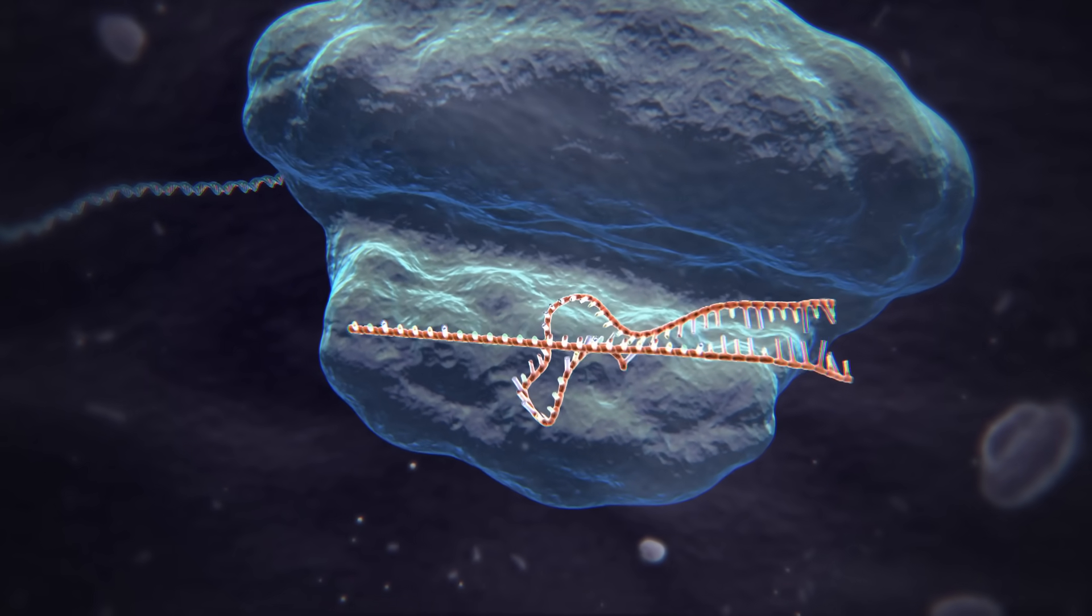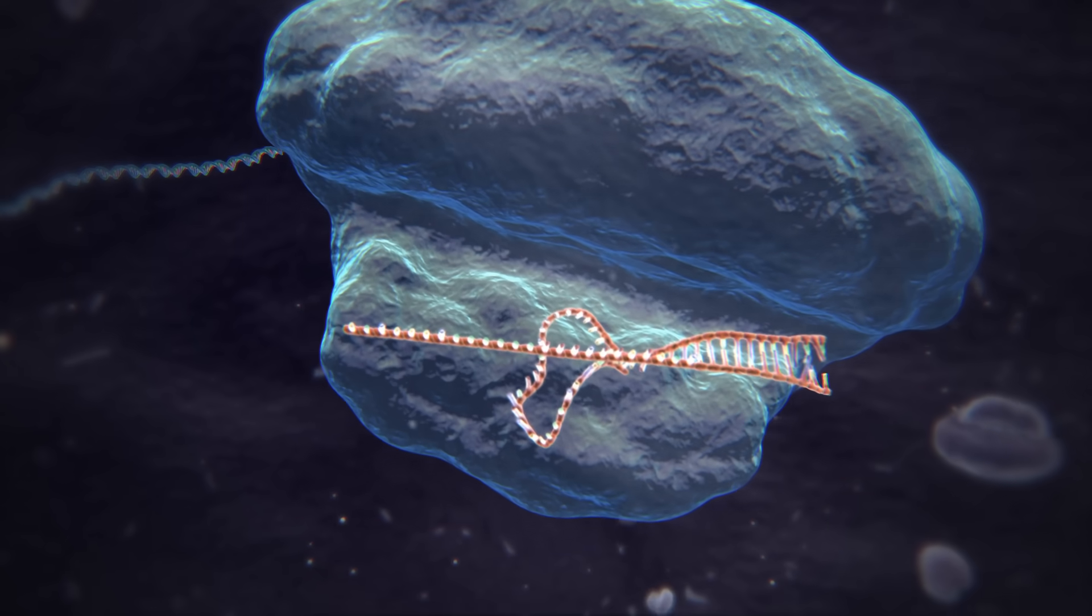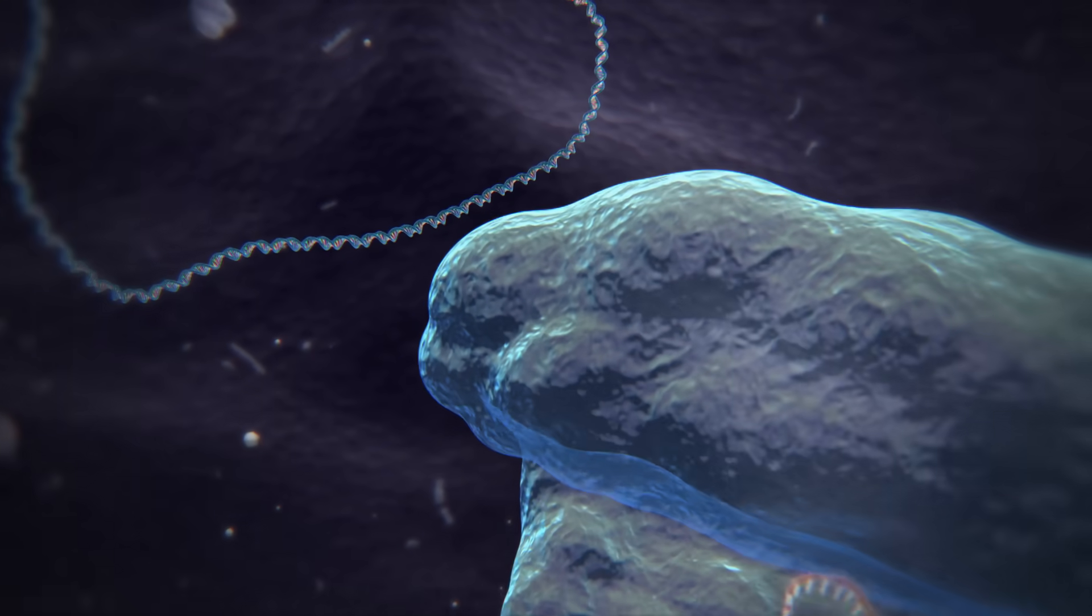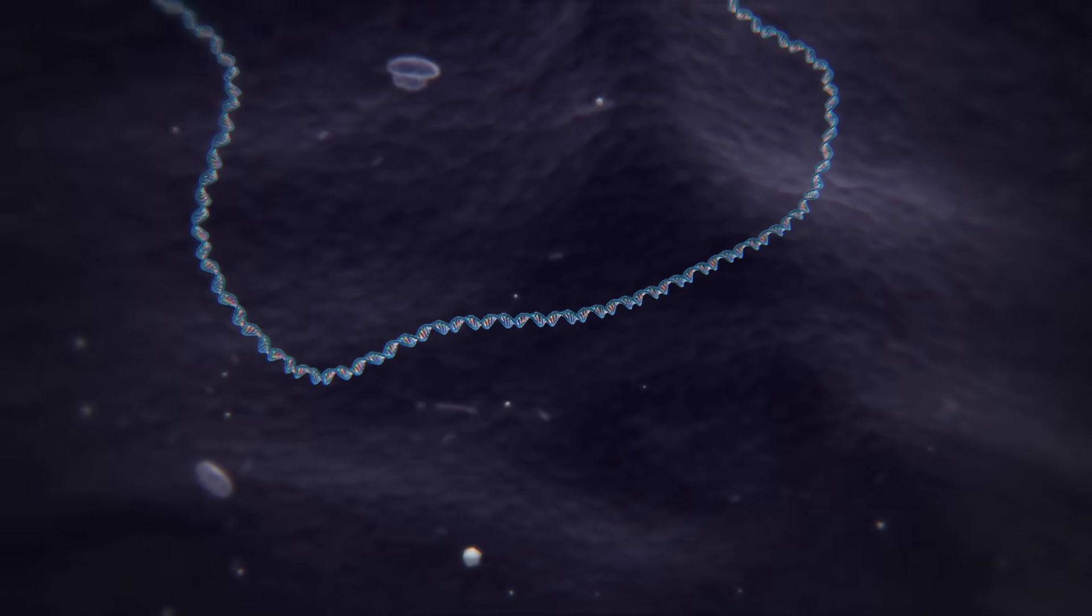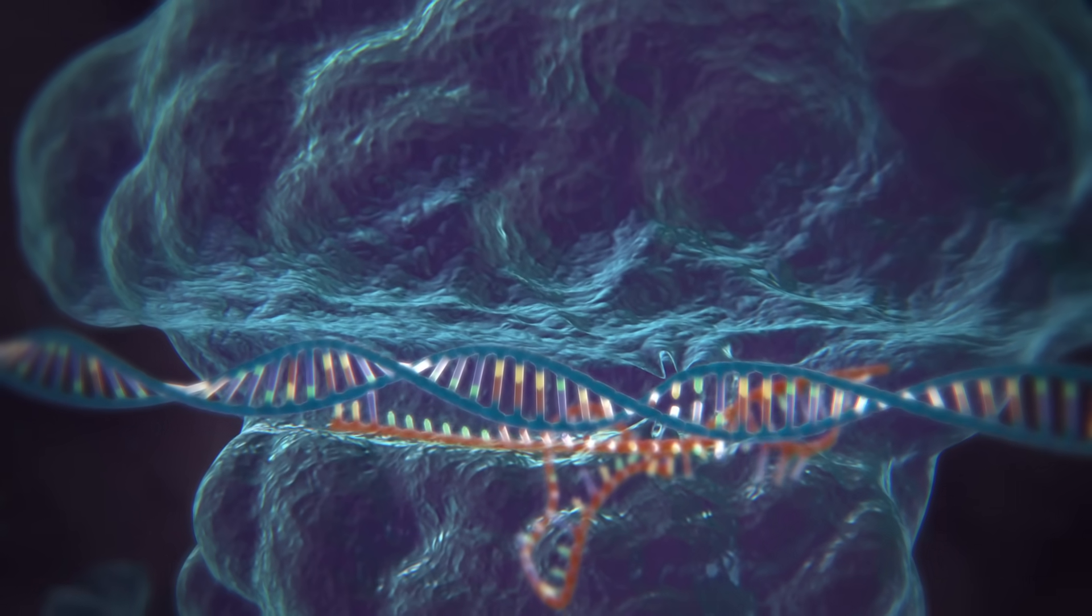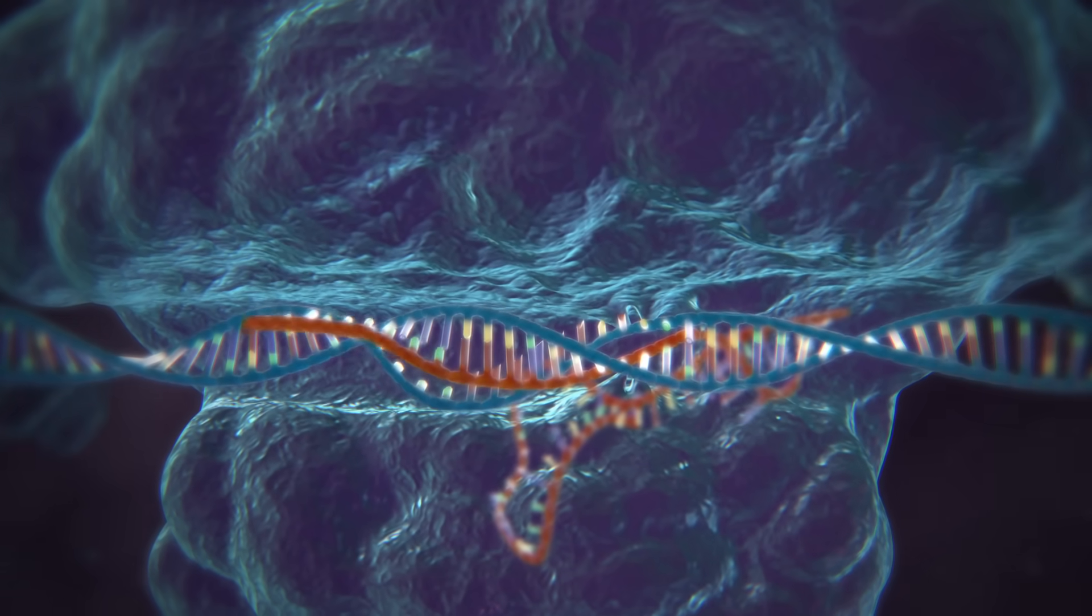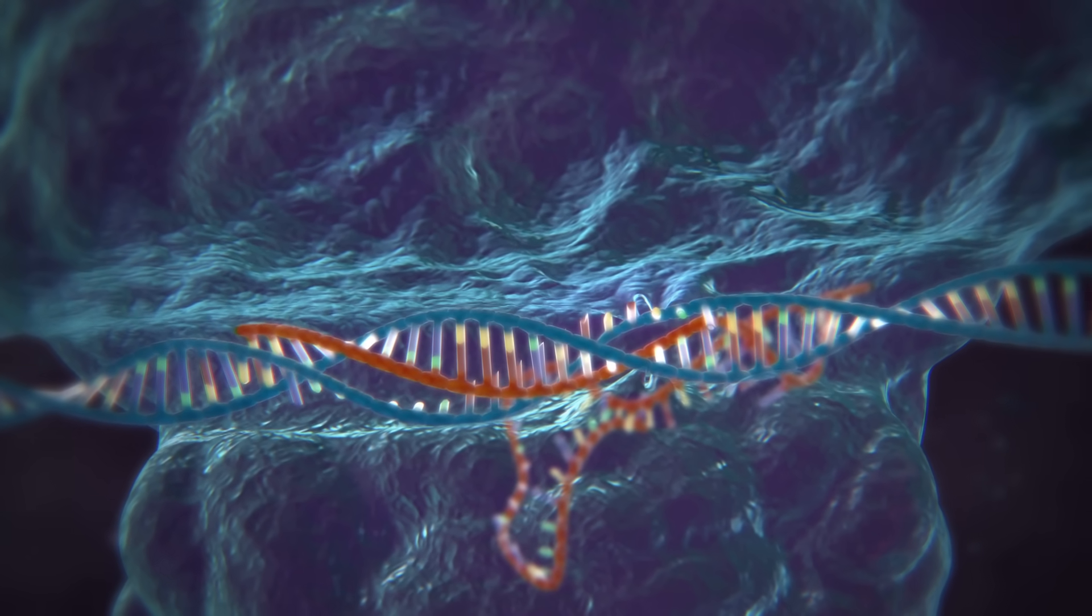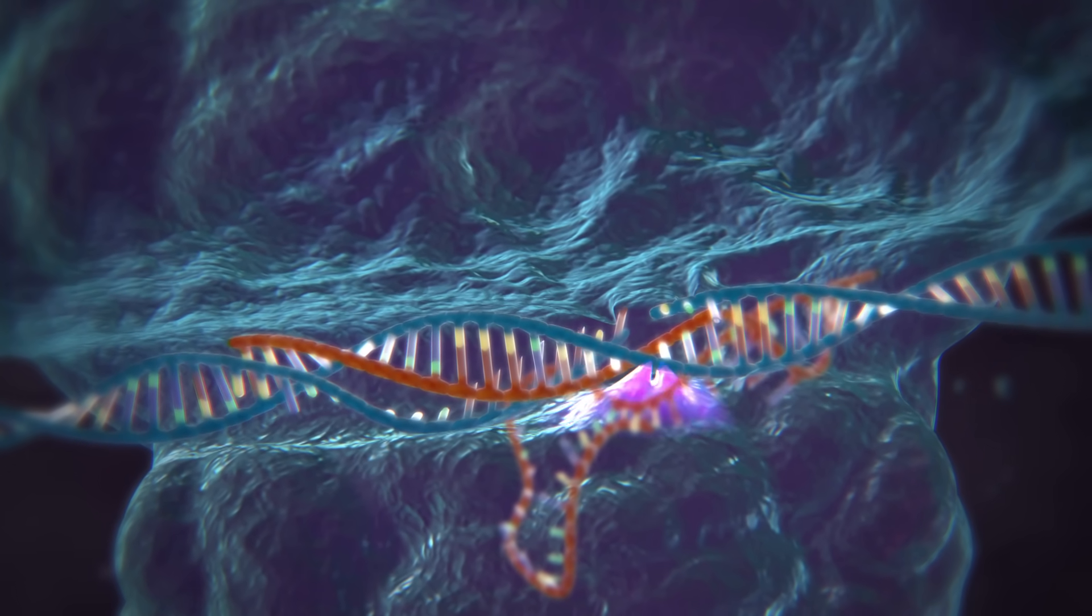These two RNAs form a complex with a protein called Cas9. Cas9 is a nuclease, a type of enzyme that can cut DNA. When the matching sequence, known as a guide RNA, finds its target within the viral genome, the Cas9 cuts the target DNA, disabling the virus.